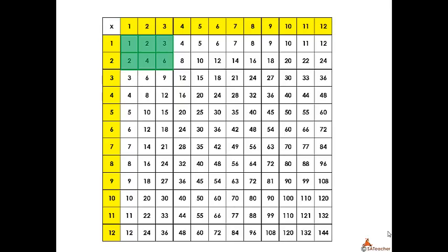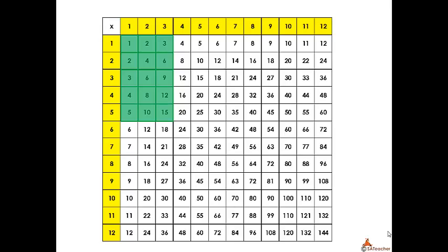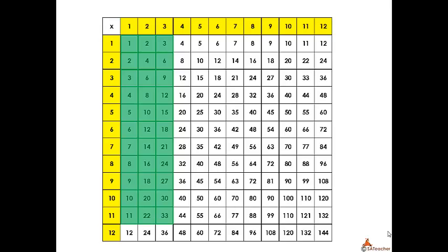Let's go back. So now we're going to say 1 times 3 is 3, 2 times 3 is 6, 3 times 3 is 9, 4 times 3 is 12, 5 times 3 is 15, 6 times 3 is 18, 7 times 3 is 21, 8 times 3 is 24, 9 times 3 is 27, 10 times 3 is 30, 11 times 3 is 33, and 12 times 3 is 36.